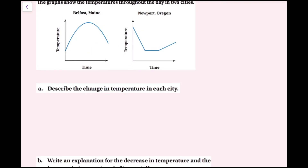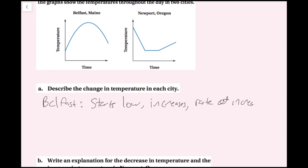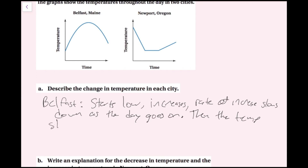Now I'll jot that down. For Belfast: the temperature starts low and then increases, but the rate of increase slows down as the day goes on. Then the temperature starts to decrease, and it decreases faster and faster — more and more — as the day goes on.